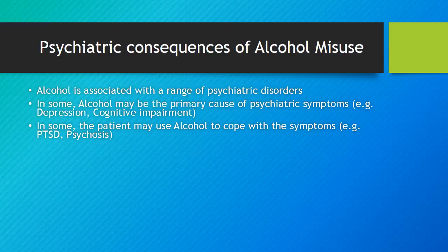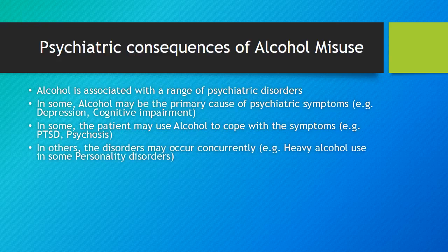In some patients, the patient may use alcohol to cope with symptoms. For example, patients with PTSD might experience severe anxiety, nightmares, flashbacks, etc., and they might self-medicate using alcohol. In others, alcohol misuse and the psychiatric disorder may occur concurrently. For example, heavy alcohol use may be seen in some personality disorders such as borderline personality disorder, or drunken driving and binge drinking may occur as part of antisocial personality disorder.